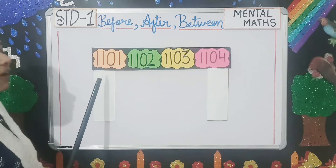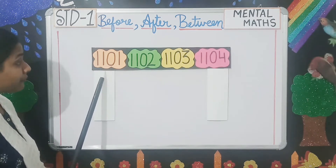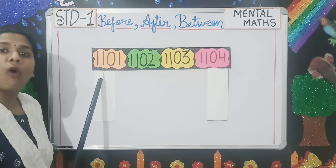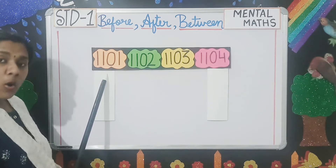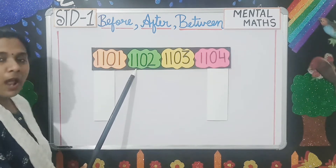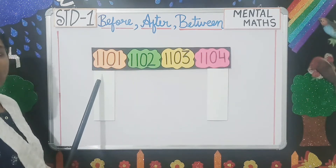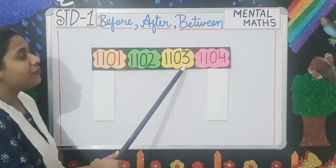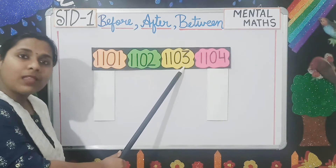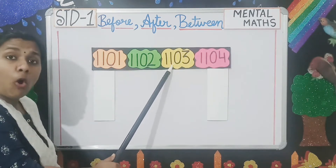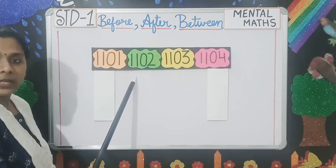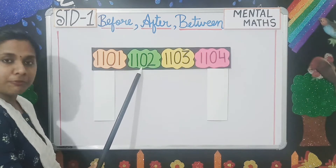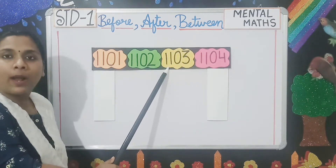Now, if I ask you what comes after 1101, for this you have to do forward counting. So when you count forward, you will know that 1102 comes after 1101. Similarly, what comes before 1103? For before, you have to do backward counting. So you count backward and then you can say that 1102 comes before 1103.